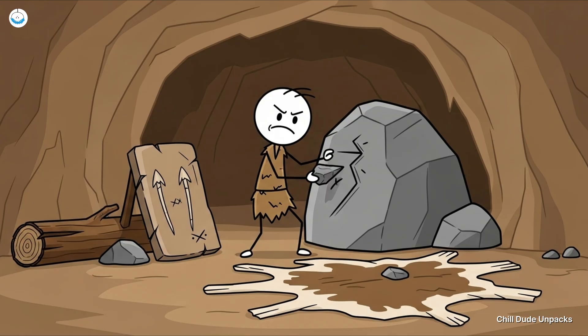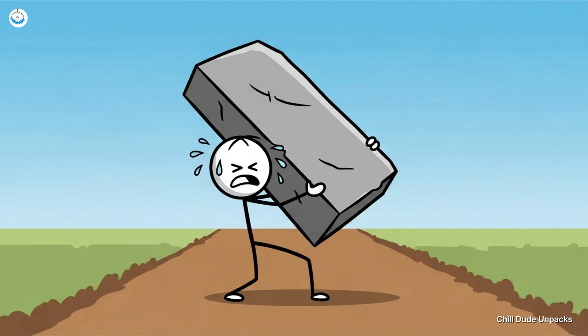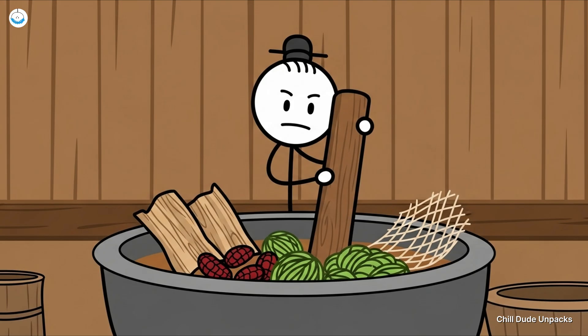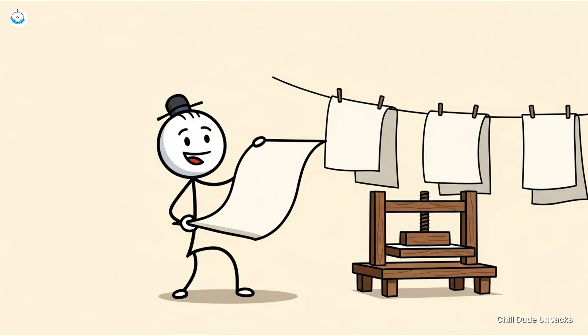Number six, paper making—because stone tablets were a pain in the chisel. Before paper, people wrote on clay, stone, wood, or animal skins. And while stone tablet influencer sounds cool, it's not exactly portable. Enter ancient China around 100 BCE, when Cai Lun and his crew decided to mash up mulberry bark, hemp, and old fishing nets into a pulp, press it flat, dry it, and boom, paper was born.